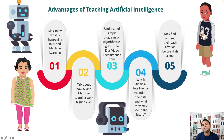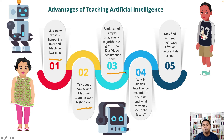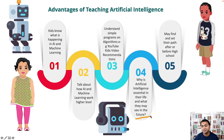What are the advantages of teaching artificial intelligence to kids? One, kids know what is happening in the AI and machine learning area. Two, talk about how AI and machine learning work at a higher level. Three, understand simple programs and algorithms — for example, YouTube Kids video recommendation. Four, why is artificial intelligence essential in their life and what they may see in the future. Five, may find and set their path after or before high school.